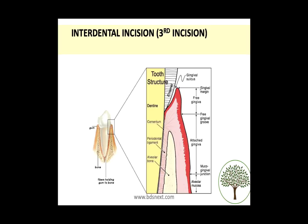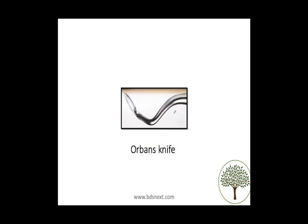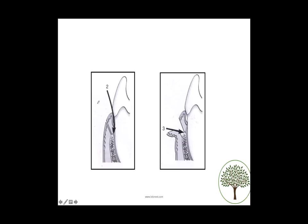The third incision is the interdental incision, given right in between the teeth — hence it's called interdental. The instrument used for this incision is Orban's knife. Quick recap: first incision is the internal bevel incision given using a number 15 or 15C blade; second incision is the sulcular or crevicular incision given inside the gingival sulcus using number 12; third incision is the interdental incision given using Orban's knife.